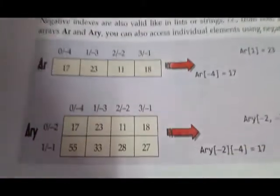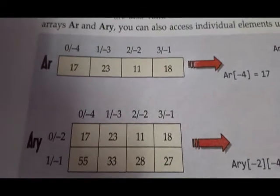I will show you in your book. Here you can see these are the subscripts: minus 1, minus 2, minus 3, minus 4. For the 2D array, here rows are minus 1, minus 2, minus 3, minus 4, and columns are minus 1, minus 2. For rows: minus 1, minus 2; for columns: minus 1, minus 2, minus 3, minus 4 — these are the reverse subscripts.